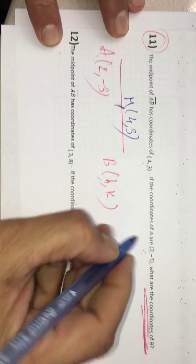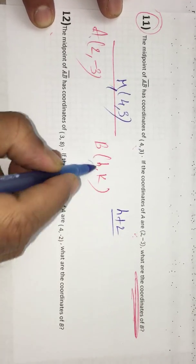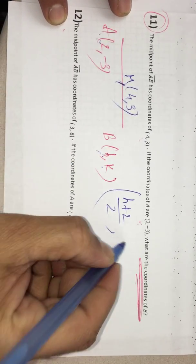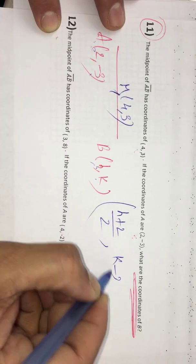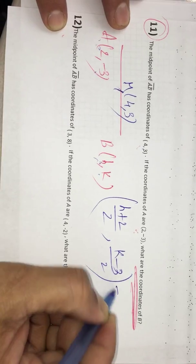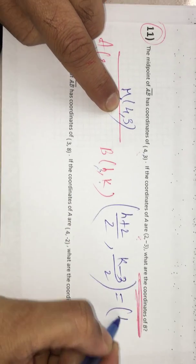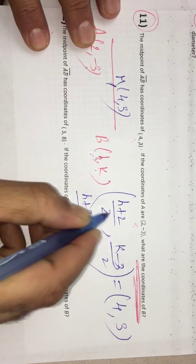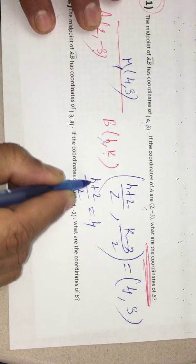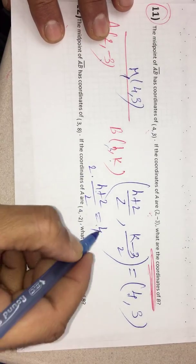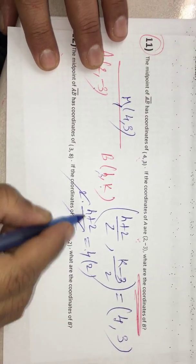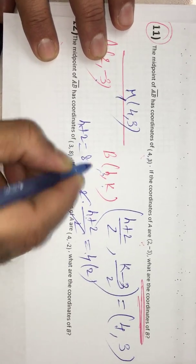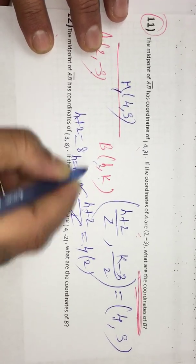Midpoint of AB is H plus 2, that is X1 plus X2 over 2, comma Y1, that is K minus 3 over 2, equal to this midpoint 4, 3. That means H plus 2 over 2 is X coordinate, which is 4. To get this H value, first multiply with 2. 2 and 2 cancel. So H plus 2 is equal to 8, and H is 6. I got 6.